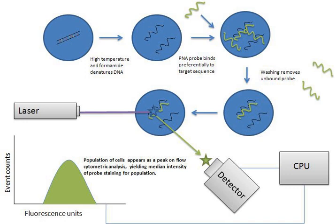A sample containing cells or particles is suspended in a fluid and injected into the flow cytometer instrument. The sample is focused to ideally flow one cell at a time through a laser beam, and the light scattered is characteristic to the cells and their components. Cells are often labeled with fluorescent markers so that light is first absorbed and then emitted in a band of wavelengths.